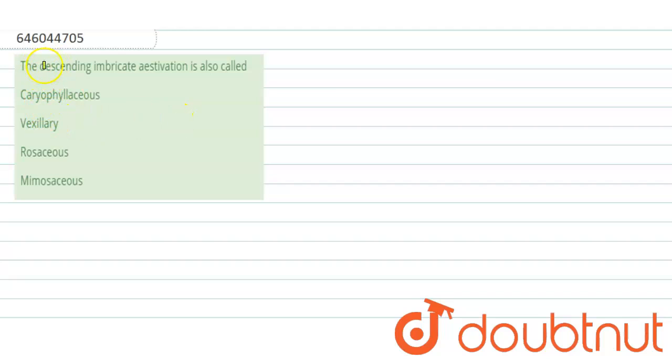So the question here is: the descending imbricate aestivation is also called. We have four options here.